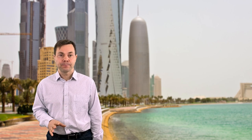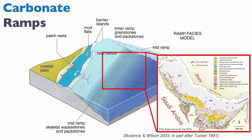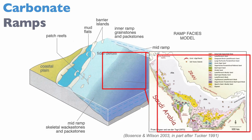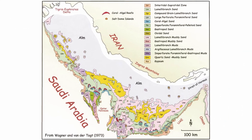What happens as you go into the mid ramp and outer ramp — much deeper? Things get more boring. On this map of facies distribution in the Gulf, as we go deeper toward Iran where the deepest part of the Gulf is, we migrate into a facies belt dominated by clays — very fine-grained sediments — and lamellibranchs, which are bivalves. That's pretty much all that is there.